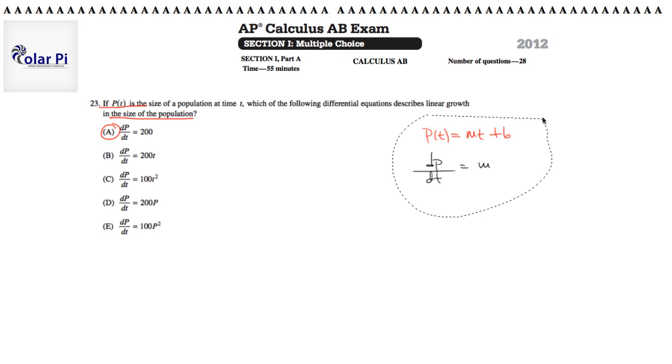Another is to actually go through the differential equations, which are the answer choices, and solve for p of t and show that p of t does a good job describing linear growth. Well, if we did that with b, just so that you see some examples, then solving dp dt equals 200t could be done using separation of variables, where we get dp is equal to 200t dt.